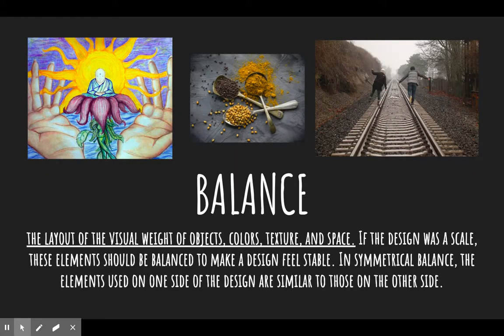Balance is the layout of visual weight of objects, colors, texture, and space. If the design was a scale, these elements should be balanced to make the design feel stable. In symmetrical balance, the elements used on one side of the design are similar to those on the other side. Here with this drawing it has a symmetrical balance — you have the hands on both sides, the flower, the sun. If it was cut in half it would almost be mirrored on the other side.